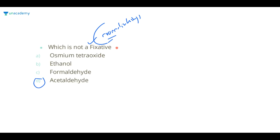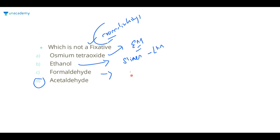Please understand: osmium tetroxide is a wonderful fixative when it comes to electron microscopy. Ethanol is a wonderful fixative when it comes to light microscopy. Formaldehyde is the most commonly used fixative ever. Now what exactly is the fixative?